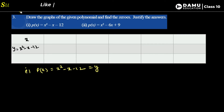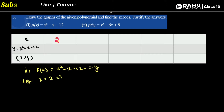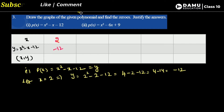These are the points we need to locate on the graph. Let x equal to 0, then y equals minus 12. Let x equal to 2, then y equals 2 square minus 2 minus 12. So 2 square is 4, then 4 minus 2 minus 12 gives minus 10, so 4 minus 14 equals minus 10. So the point is 2 comma minus 10.